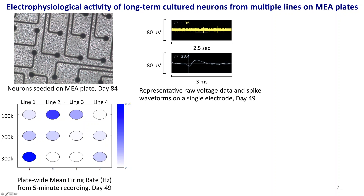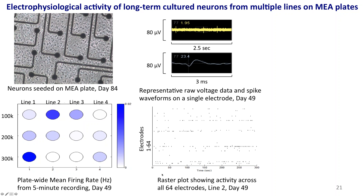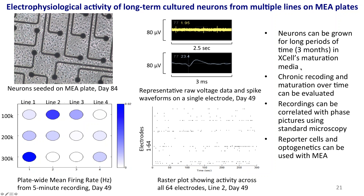Here is representative raw voltage data and spike waveforms on a single electrode at day 49, and a raster plot showing activity across all 64 electrodes. The key technical message is that you can grow neurons in prolonged cultures and record as neurons mature. I'm happy to discuss details about how to seed cells and keep them healthy long enough for recording.